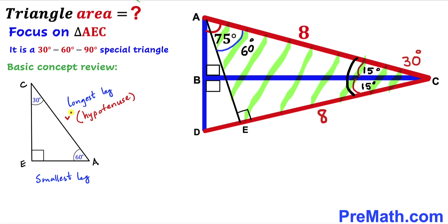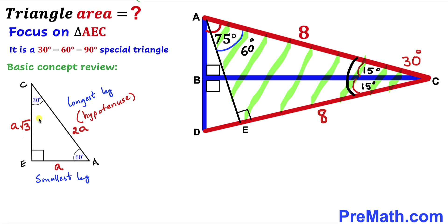In a special 30-60-90 triangle, the longest leg is twice the smallest leg. If the smallest leg is 1, the longest leg is 2, and the third leg is the square root of 3. In general, if the smallest leg is labeled lowercase a, then the longest leg is 2a and the third leg is a times the square root of 3.